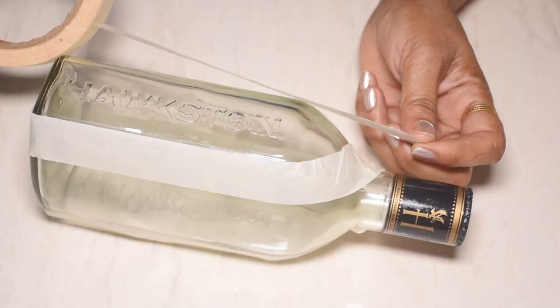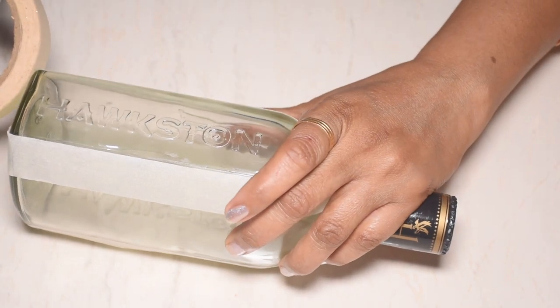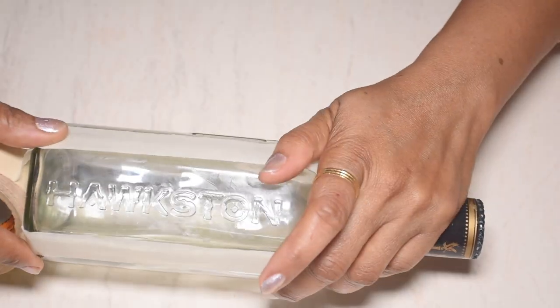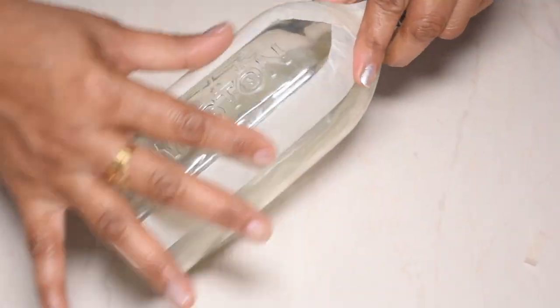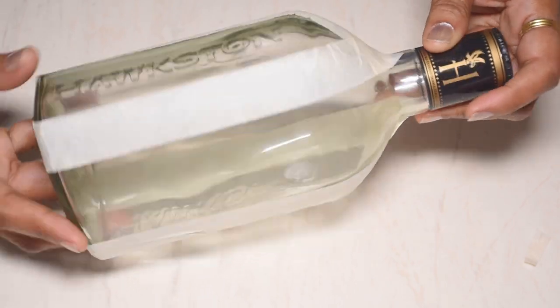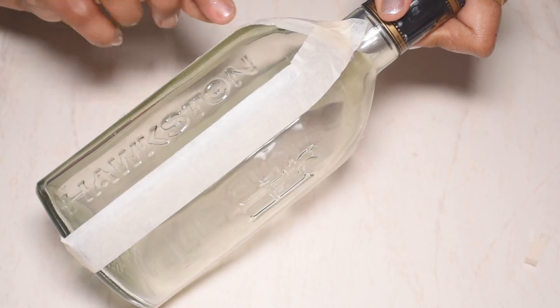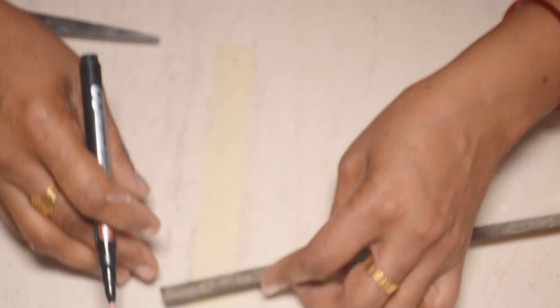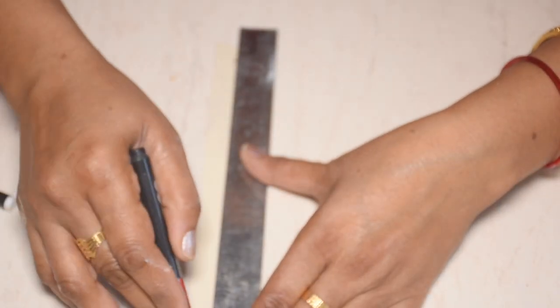We apply masking tape on the bottle in this way. For the next step, we cut the masking tape like this and remove the excess.